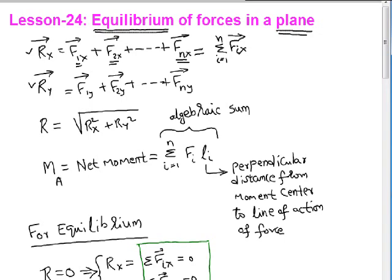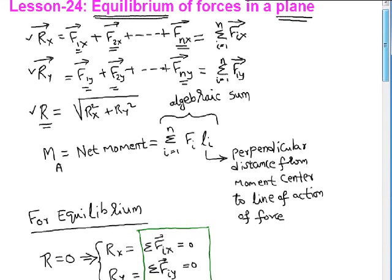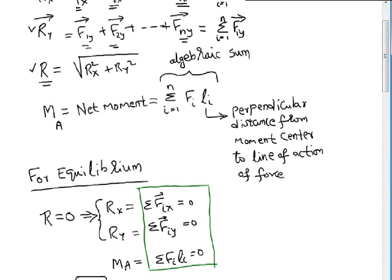Similarly, y components can be obtained by summing the y components of all forces — y component of F1, y component of F2 — all of which we can sum algebraically to obtain Rx and Ry. Once we find Rx and Ry, we can find the magnitude of the resultant by summing the squares. Similarly, we can find the net moment as F1·L1 plus F2·L2 and so on for all the forces up to Fn·Ln.